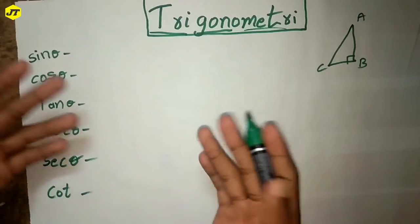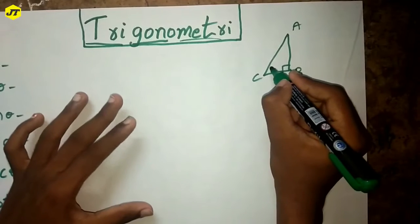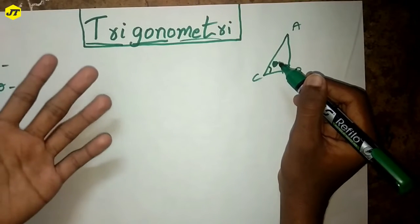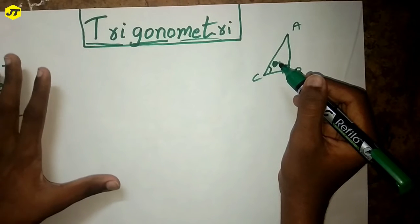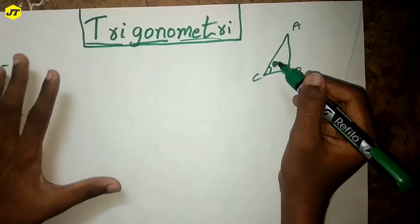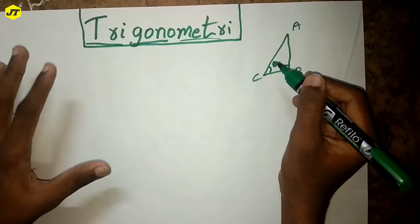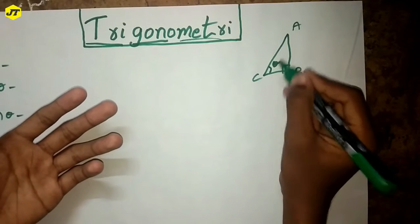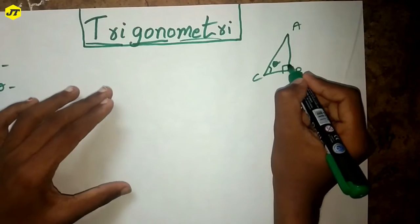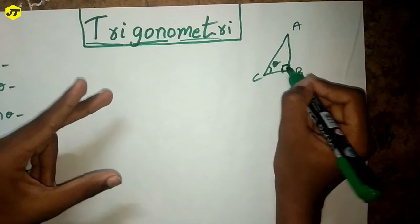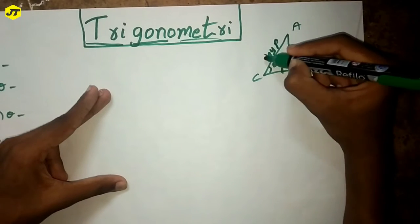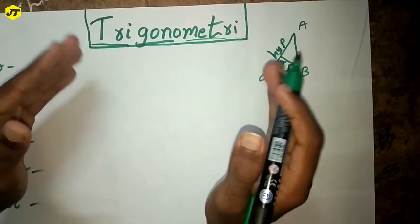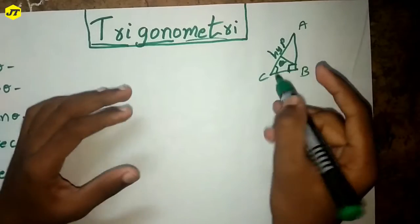If you take theta of a right angle triangle at C, what will be the adjacent and hypotenuse — this is the main concept. This is an important concept in 10th class trigonometry. If you take a right angle triangle ABC with a right angle at B and theta at C, the hypotenuse is the side opposite to the right angle. That's the hypotenuse.